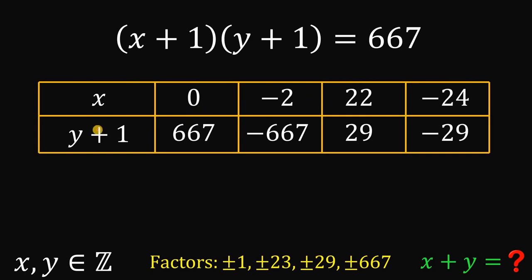Now, we will do the same thing to solve for the value of y. So, y plus 1 equals 667 or negative 667 or 29 or negative 29. So, to solve for the value of y, let's subtract 1 again on both sides of our equations. If we do that, we have y here.